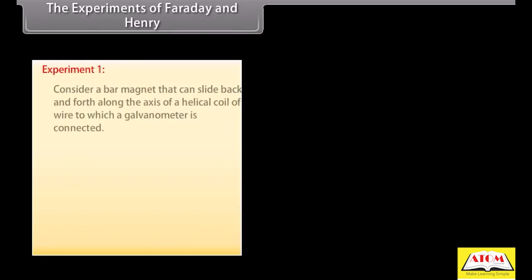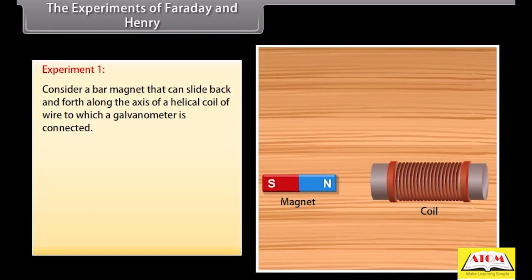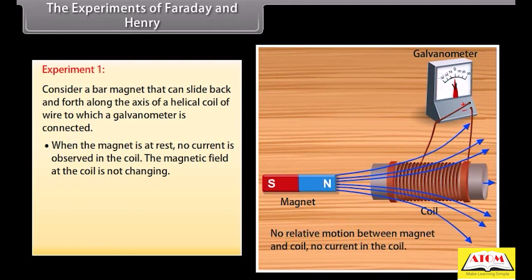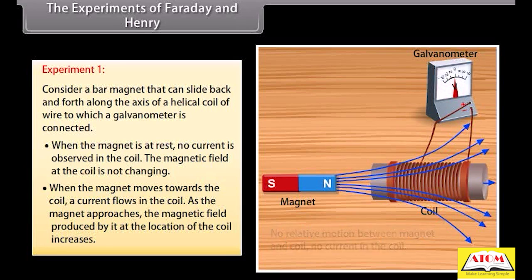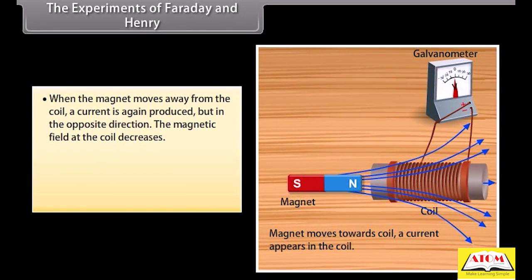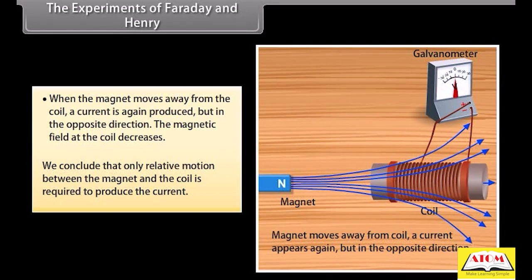Experiment 1: Consider a bar magnet that can slide back and forth along the axis of a helical coil of wire to which a galvanometer is connected. When the magnet is at rest, no current is observed in the coil — the magnetic field at the coil is not changing. When the magnet moves towards the coil, a current flows in the coil, and the magnetic field increases. When the magnet moves away, a current is produced in the opposite direction. We conclude that only relative motion between the magnet and the coil is required to produce the current.